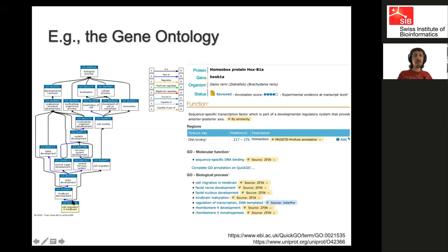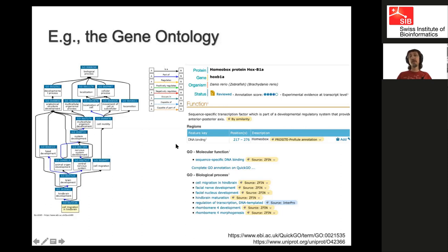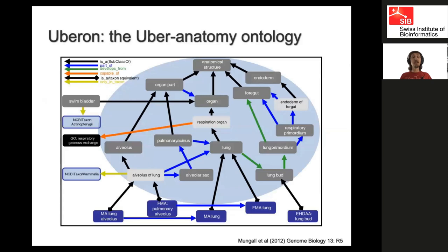The typical example of an ontology that everyone knows in life sciences is the gene ontology. Here you see a term — 'cell migration in hindbrain' — and we see it has 'is a' relations: it is a 'hindbrain development,' it is a 'cell migration.' We also have 'part of' relations — for example, 'brain development' is part of the 'central nervous system.' You can see that an ontology is a graph, not a tree, because one term can have several parents and several children. These are used in annotations; for example, in SwissProt, a homeobox protein HoxB1A has manually curated annotations to gene ontology terms including 'cell migration in hindbrain.'